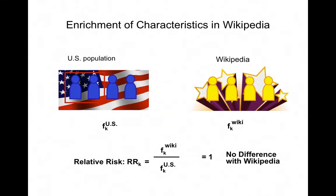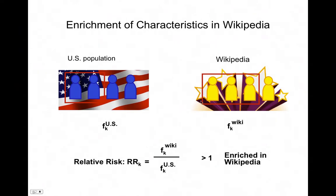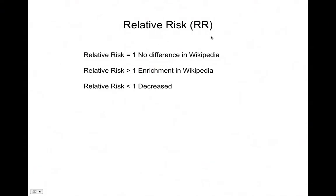If we observe a higher percentage of a characteristic in Wikipedia — for example, the characteristic is still found in half the U.S. population but in three quarters of Wikipedia — then the frequency in Wikipedia is higher and the ratio is greater than 1, meaning it's enriched in Wikipedia. If relative risk equals 1, there's no difference. If relative risk is greater than 1, that characteristic is associated with notability. If relative risk is less than 1, it's decreased.